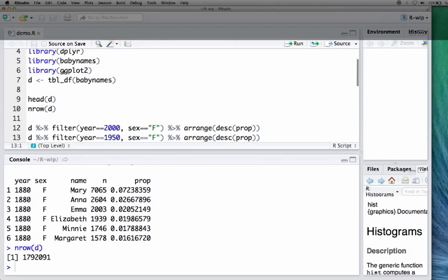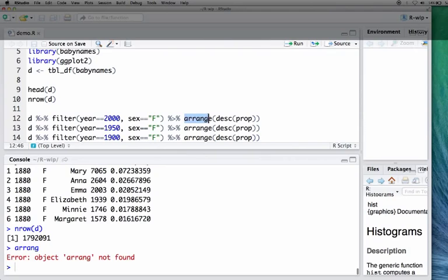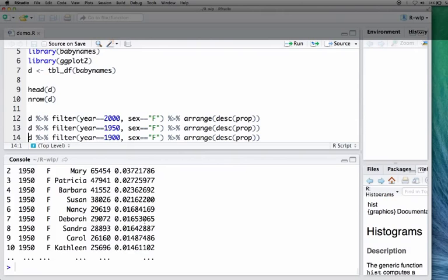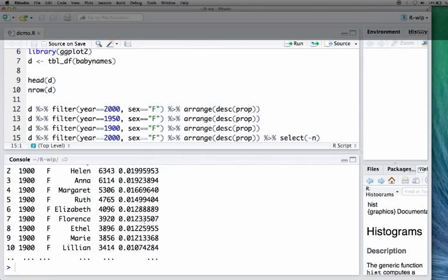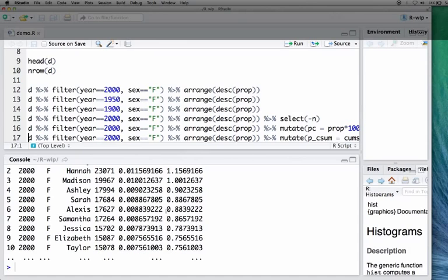The way dplyr works is that you have the data, then you apply this chaining operator, and then here is your function. You are now subsetting this here and this sex. And then arrange is the sorting. If you're running this, then you would see some of the names. Unfortunately, I have to speed up. You would see that in the 50s, there were completely different names that were popular in the 1900s. Again, various other names. Select will select the variables. With mutate, you can compute something like here, a new variable percentage, which is prop times 100.